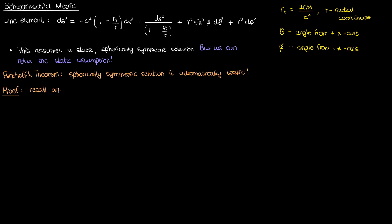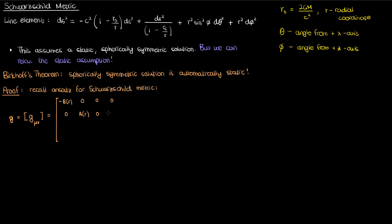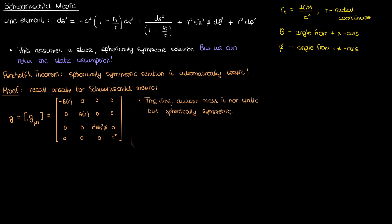We'll go back to the ansatz for the Schwarzschild metric that we developed a few videos back, but this time we'll assume that we have a spherically symmetric mass but not a static mass — it changes with time. We could have the mass expanding radially outwards with time or shrinking radially inwards with time.